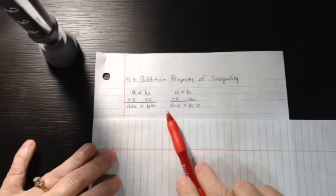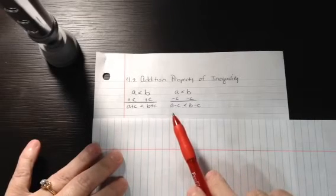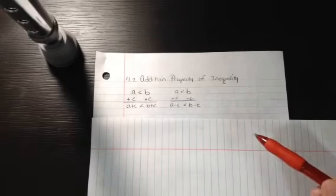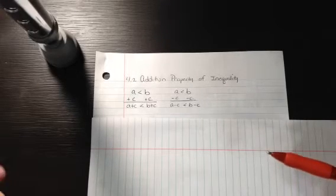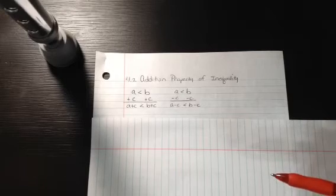In this section, we study the addition property of inequalities. For equalities, the addition property says that when you have two things that are equal, if you add the same thing to both sides, you still have an equal statement.